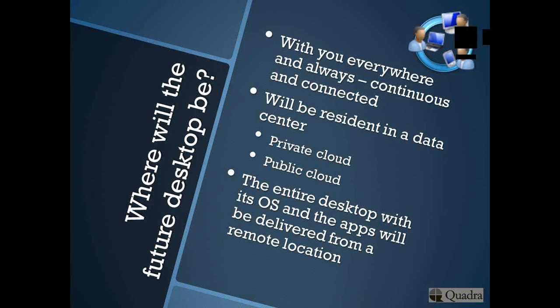The clouds are available to people in different ways, in different delivery models. Those clouds will contain the desktop — the desktop will be residing in those virtualized data centers. And as and when you require, you will switch on your machine — it could be your PC, your laptop, or your mobile phone — and you will see the desktop being made available to you from the cloud. The desktop is going to reside in the data center and will be made available to your gadgets.